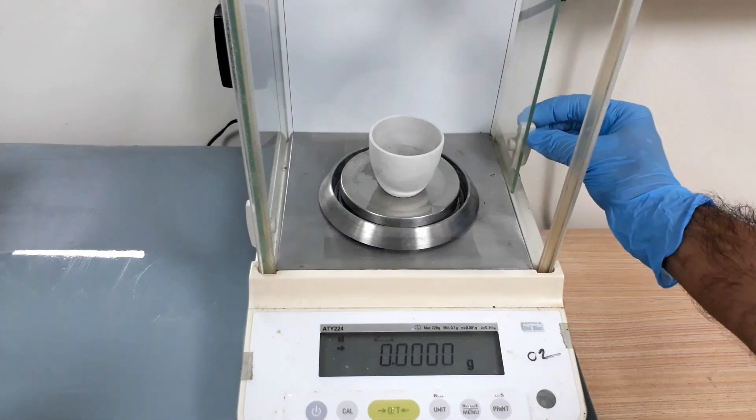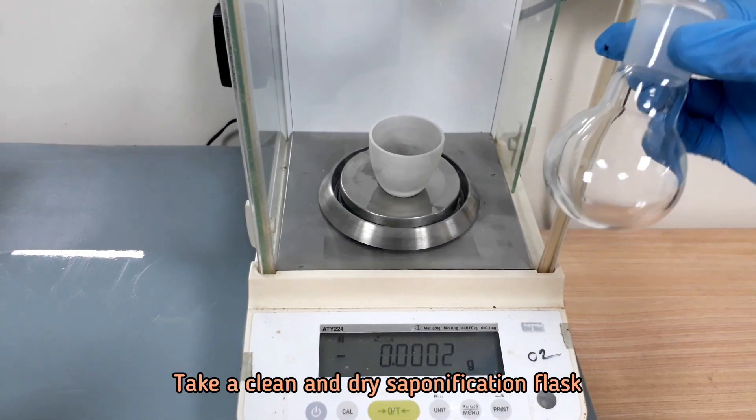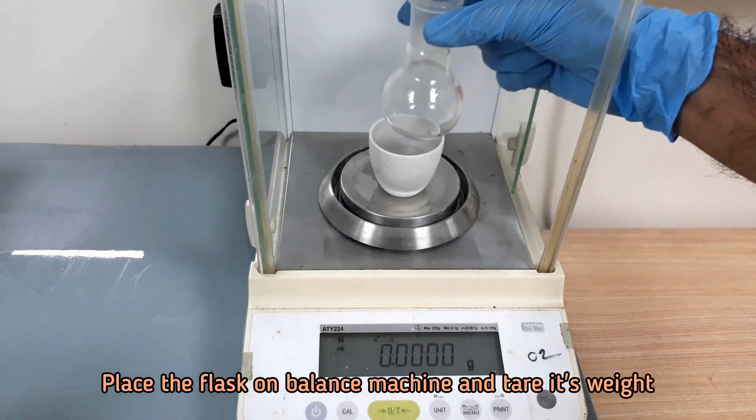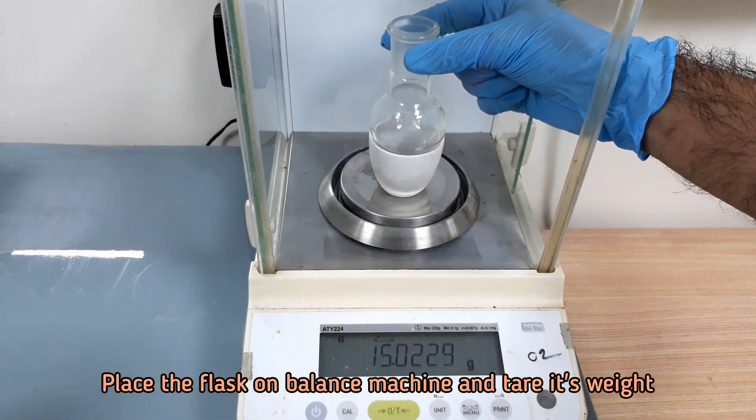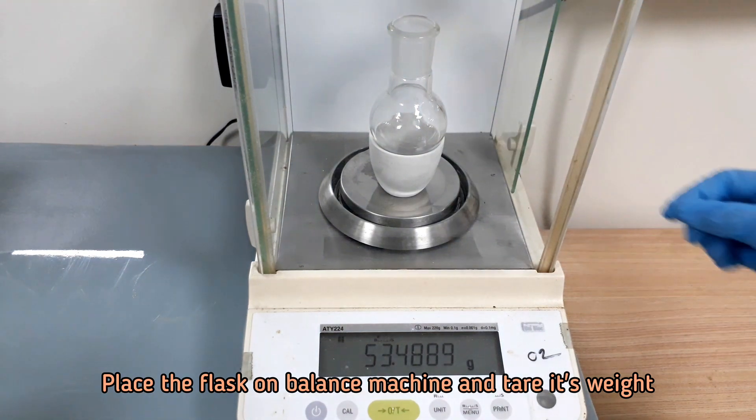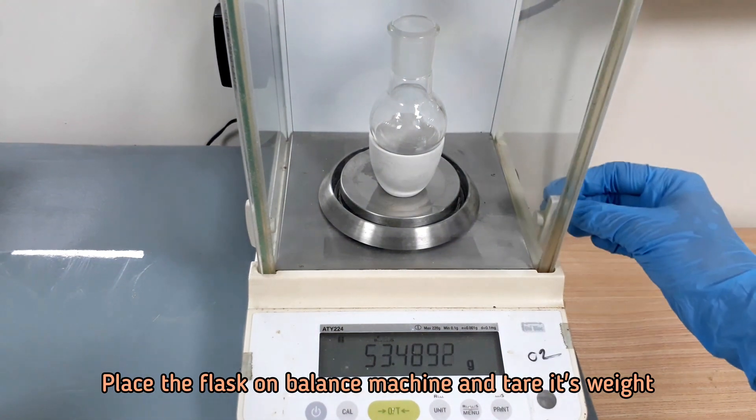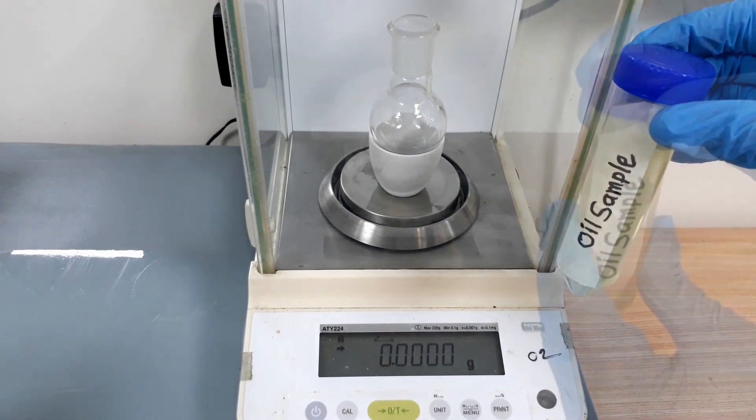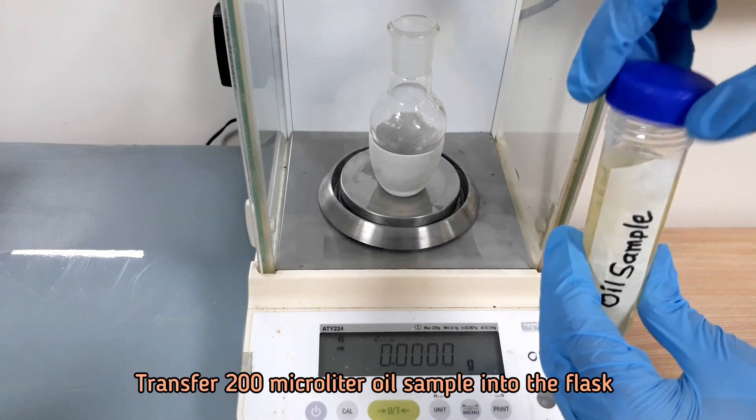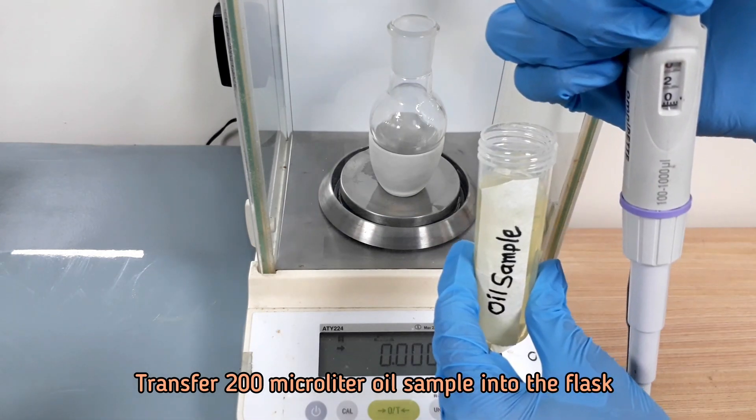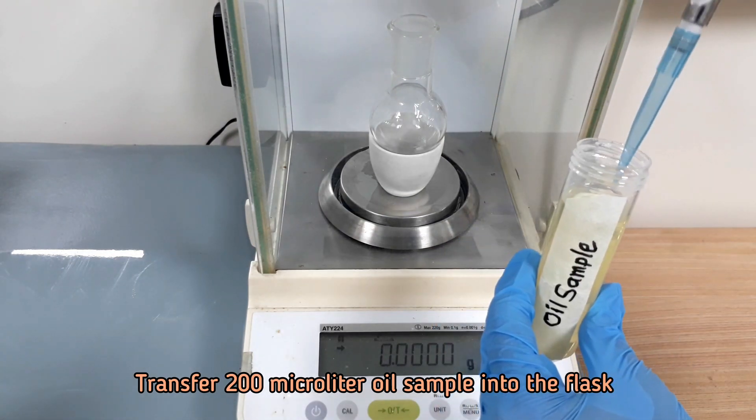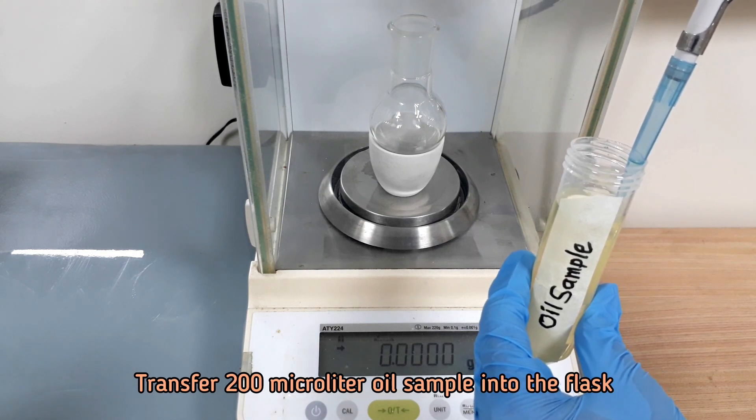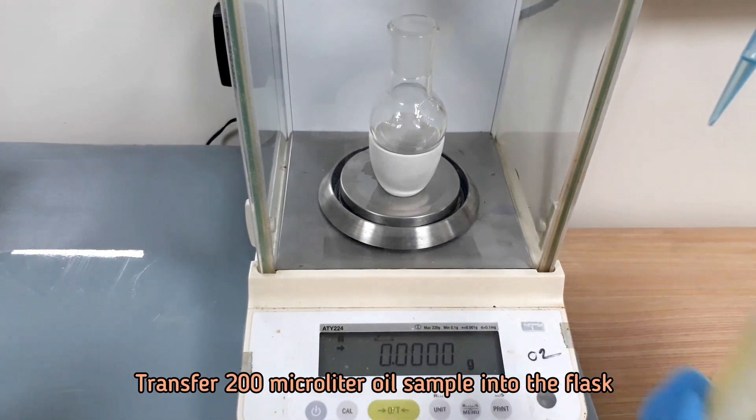Choose a clean and dry round bottom saponification flask for the sample preparation. Transfer 200 microliter oil sample into the flask and note the sample weight.